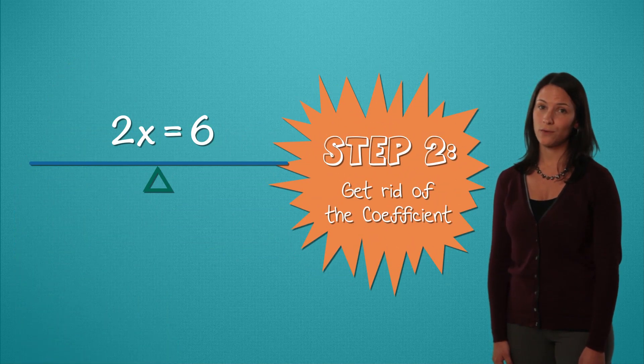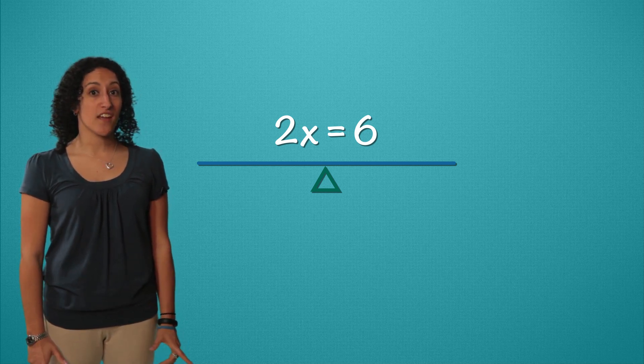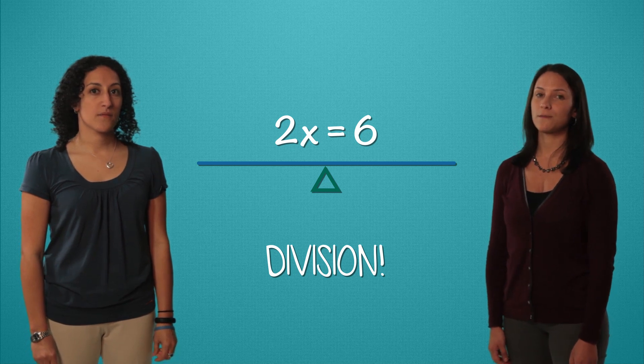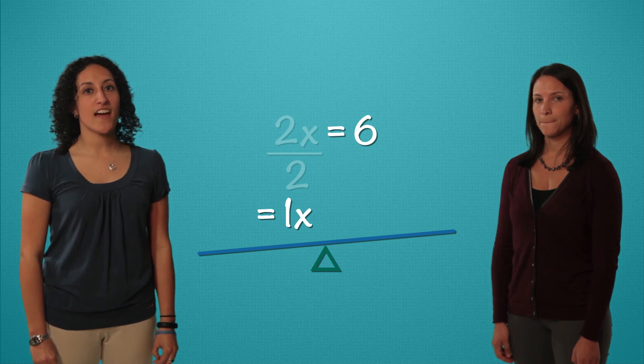Now step 2. Get rid of the coefficient. This 2x really means 2 times x and the opposite of multiplication is division. We divide by 2 in order to get rid of this coefficient. 2x divided by 2 is 1x. We can write that as x.